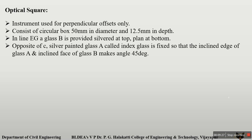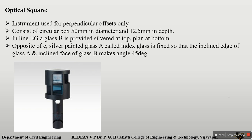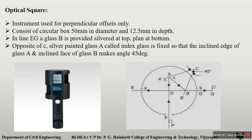The last one is the optical square. It is also used for perpendicular offsets. It consists of a circular box of 50 mm diameter and 12.5 mm in depth.